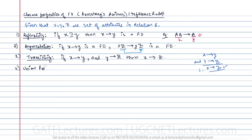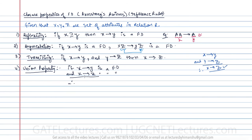The next property is the union property. If X determines Y is a functional dependency and X determines Z is a functional dependency, then you can union these two: X determines YZ. This is called the union property.